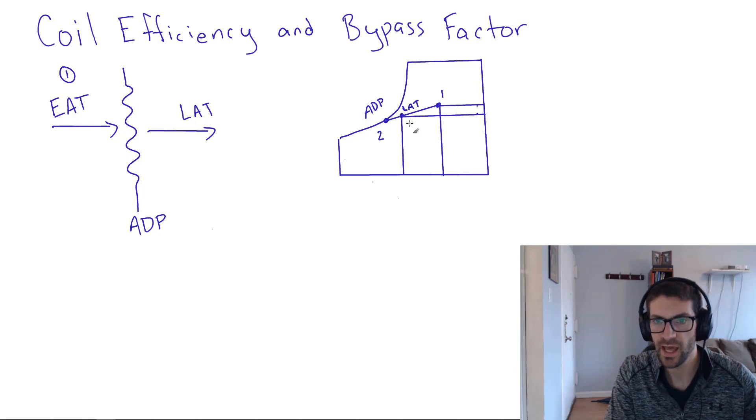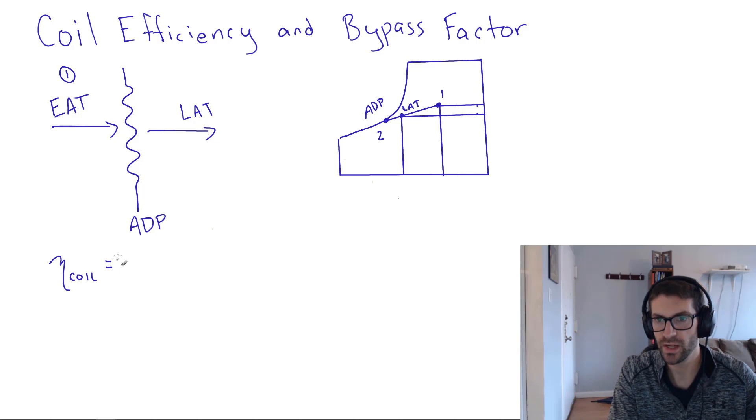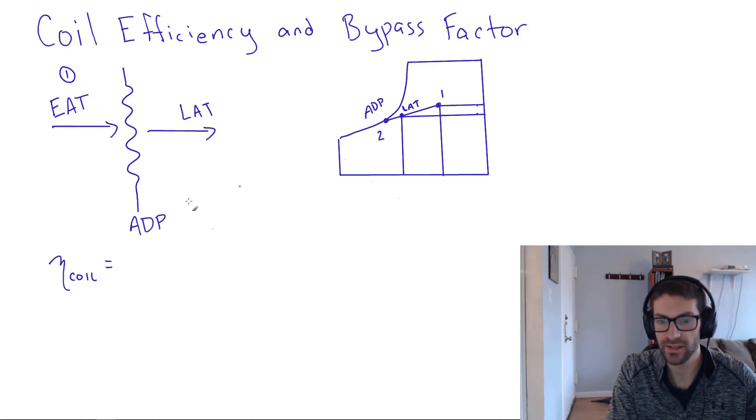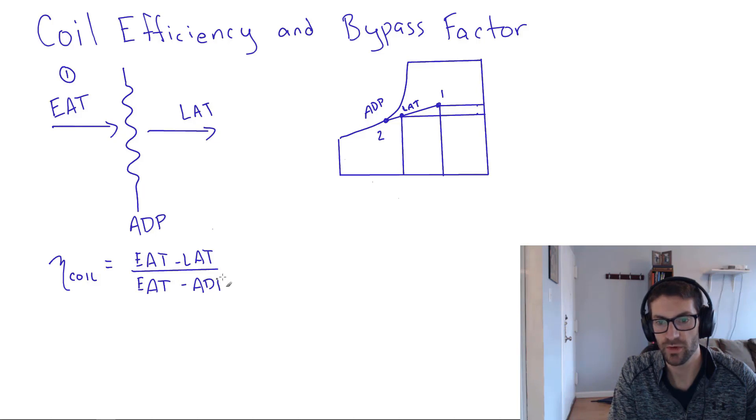So how do we actually calculate the coil efficiency? The efficiency of a coil is given by the ratio of the temperatures. You can also do ratio of humidity ratios, although it's less common. So the delta T that we're actually seeing is going from entering air to leaving air as compared with the delta T that we could be seeing, which is the entering air minus the ADP. That would be a ratio that would equal one if it was 100% efficient coil.